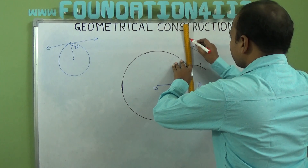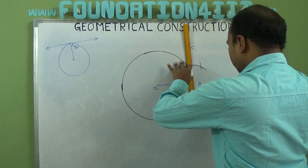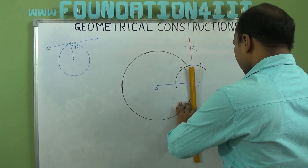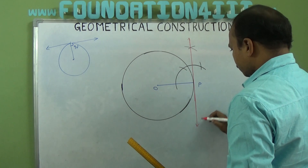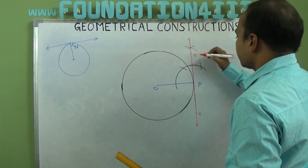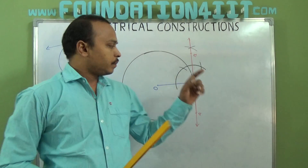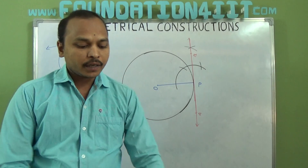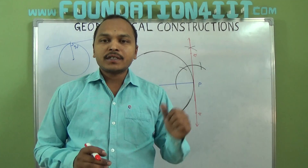Extend the line. Take any points A and B on it — so AB is the tangent line to the circle at point P. This is the way we can construct a tangent to a circle when the center is known.